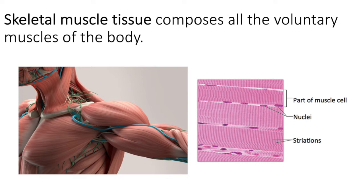Skeletal muscle has a very unique appearance that we will explore in detail when we do the muscular system. It is characterized by long cylindrical cells that are multinucleated — each cell has more than one nucleus because those cells are so long that one nucleus just wouldn't be enough. There is a striated or banded appearance due to a subcellular structure called the sarcomere. As stated, skeletal muscle is voluntary.